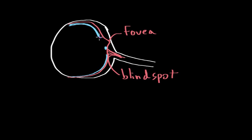Cones, on the other hand, which we'll represent in purple, are actually found throughout the fovea — in a really high concentration near the fovea. There are no cones at the blind spot, and there are very few cones sprinkled throughout the rest of the eye, kind of throughout the periphery.